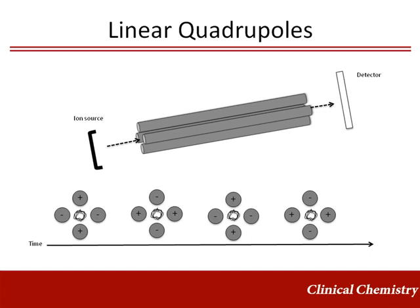Linear quadrupoles have four parallel rods arranged in a square formation. At any given time during the analysis, one set of diagonal rods is positive while the other diagonal set is negative. Which set is positive and which set is negative alternates back and forth during the analysis. For an analyte at a known mass-to-charge ratio, the amount of positive or negative charge and the frequency at which the diagonal pairs switch their sign is optimized to produce a successful ion flight path through the quadrupole.